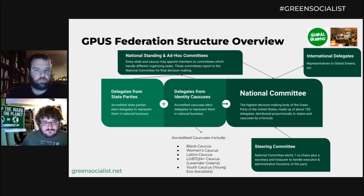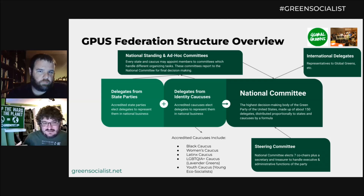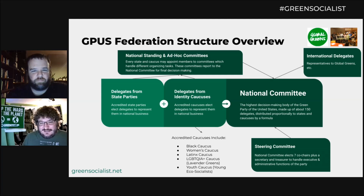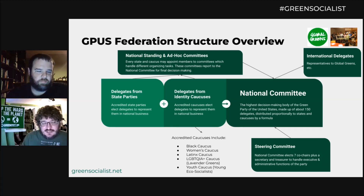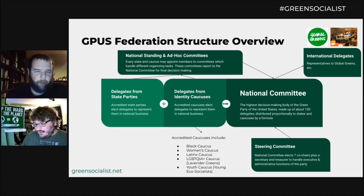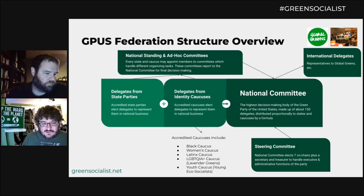So the national committee is our Congress where folks get together and make the high-level decisions. The steering committee handles more administrative day-to-day decisions — they're the cabinet. And then a lot of the actual work of the National Green Party gets distributed to the standing committees; there are about 22 of them. For example, there's a media committee that puts out press releases and does social media, a platform committee that reviews platform amendments, and a campaign committee that can help candidates get started with their campaigns.